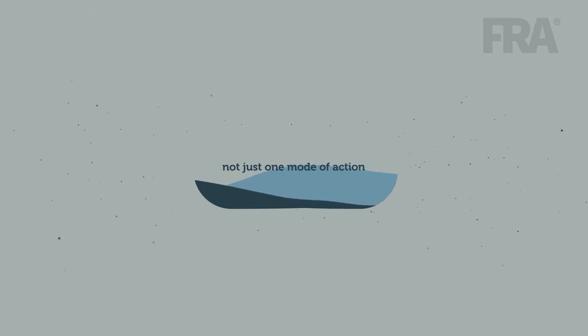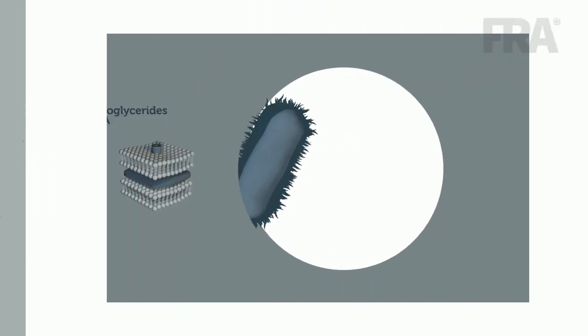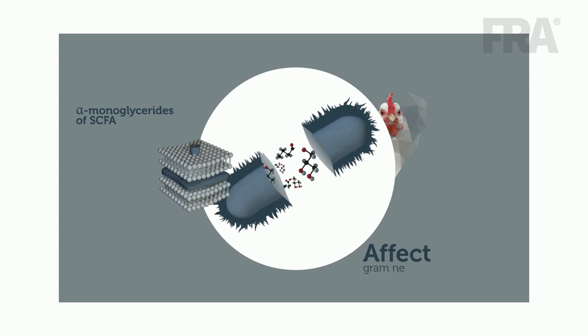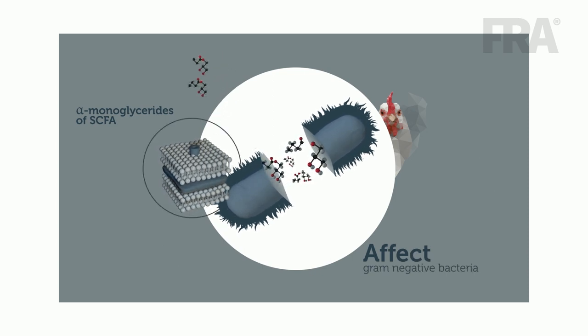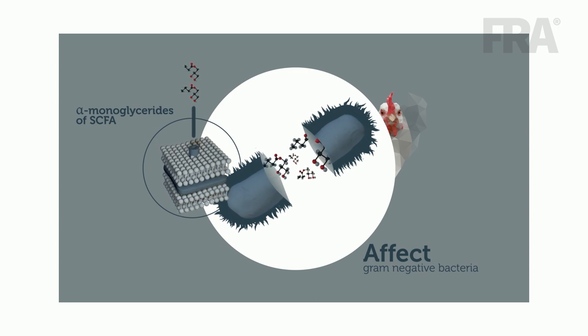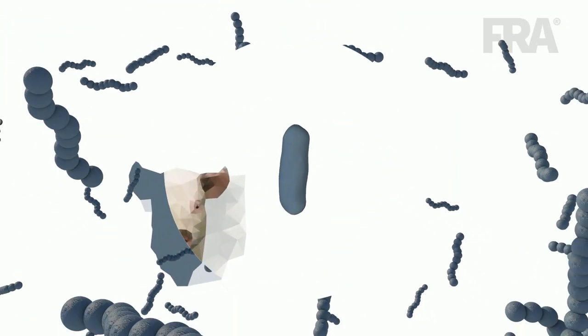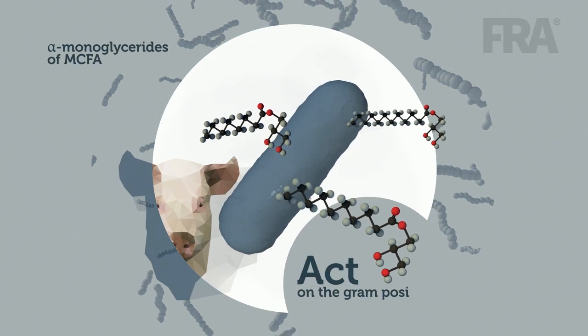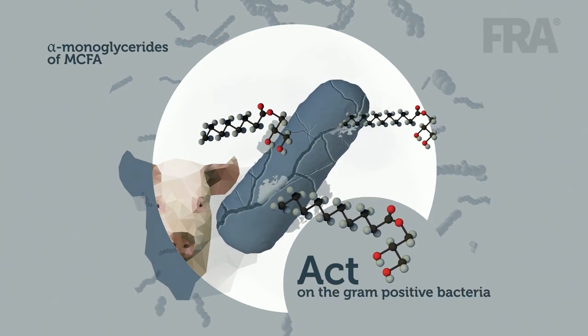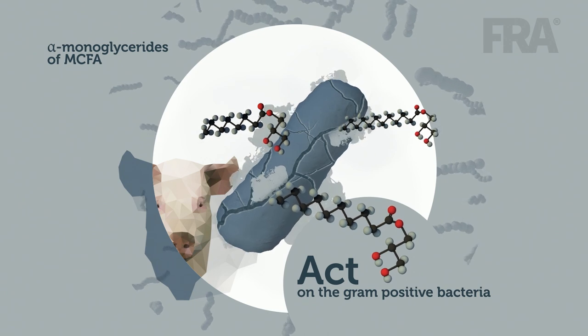The alpha-monoglycerides of short-chain fatty acids affect the gram-negative bacteria mostly inside the bacteria, as they can easily enter the bacteria. In contrast, the alpha-monoglycerides of medium-chain fatty acids act on the cell membrane of the gram-positive bacteria and on the fat envelope of fat-enveloped viruses.